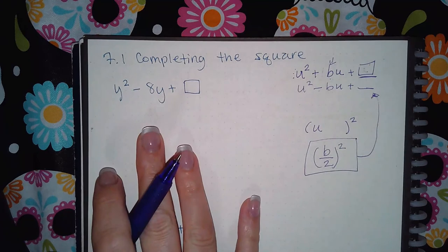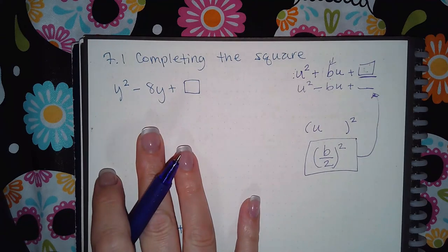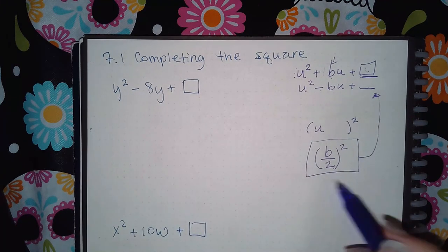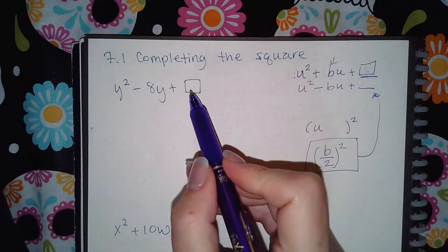Now here they're not asking us to factor it. All they're asking us for is that number that would go in the blank. So all I need to do is this B over 2 squared to figure out what that number is.